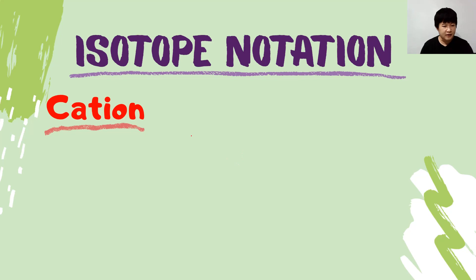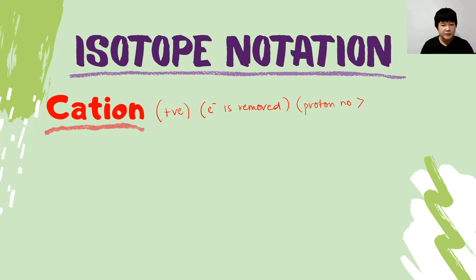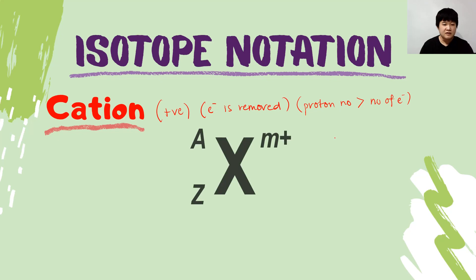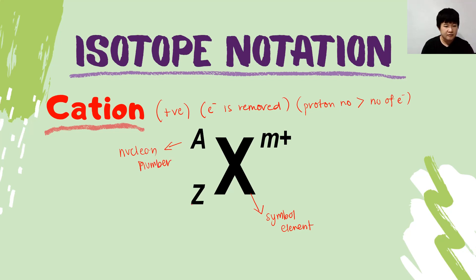Next, let's move to cations. A cation is a positively charged ion — electrons are removed. When an electron is removed, the proton number becomes larger than the number of electrons. The isotope notation has the same form: X is the symbol of the element, A is the nucleon number, Z is the proton number. What makes the cation notation different from the neutral atom is the positive charge shown in the top right corner of the symbol.